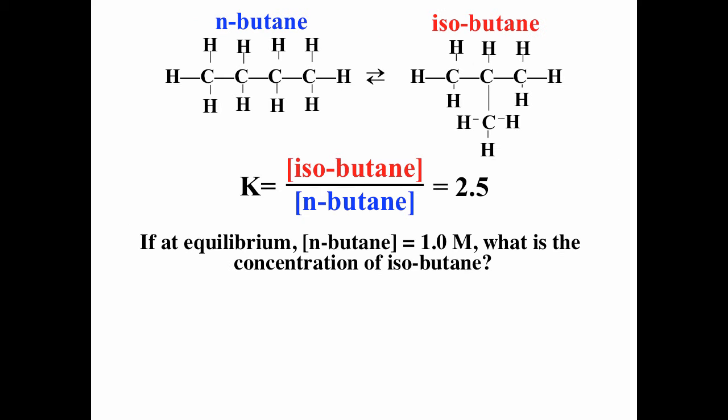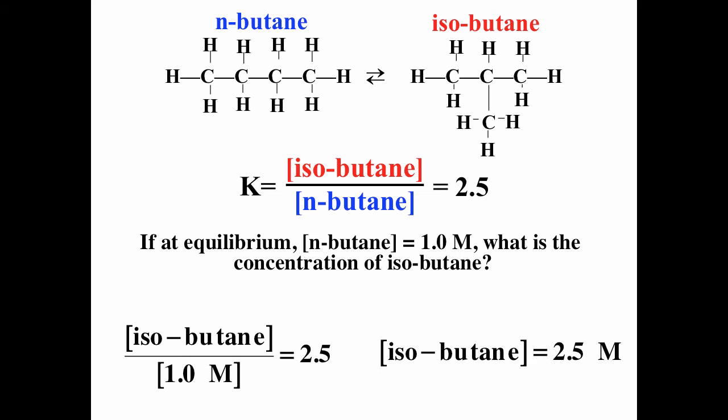This is a very simple equilibrium problem. We have m-butane and isobutane. The isobutane is a little bit more stable, so K is greater than one. If at equilibrium m-butane is 1.0 molar, what is the concentration of the isobutane? Isobutane equals K times n-butane, so if n-butane is 1, isobutane has to be 2.5.